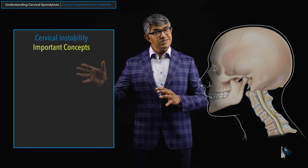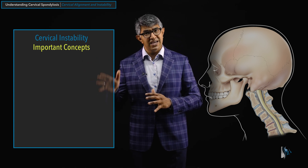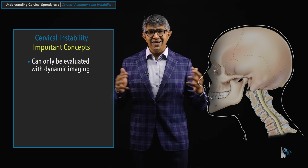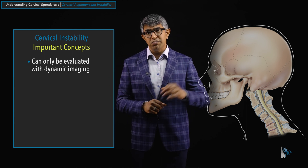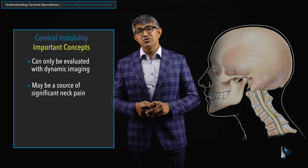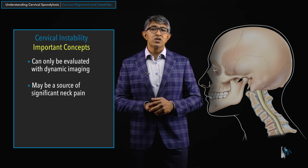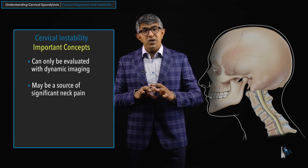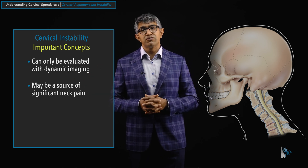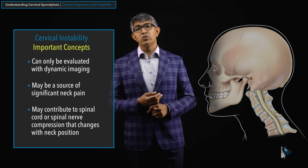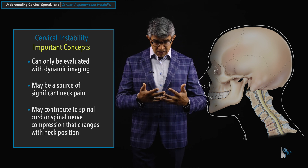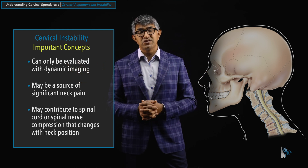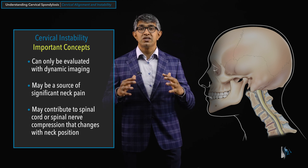Instability is a fairly uncommon thing to encounter, and it can really only be evaluated with dynamic imaging. If you just got an MRI and somebody says retrolisthesis on it, you really want to see what flexion and extension x-rays show before labeling it as such. Instability can be a source of neck pain, and I see it most often in people with rheumatoid disease or rheumatoid arthritis, where it's a destructive arthropathy. It can also contribute to spinal cord and nerve compression in a postural way — leaning forward may increase pressure on the spinal cord, while leaning back may reduce it, depending on ligament hypertrophy and other factors.